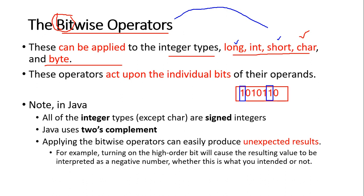One exception is that character is also treated as integer. However, in Java, except character, all integer types are signed. The most significant bit represents the sign of the number. If that bit is 1, the number is negative; if it is 0, the number is positive. For example, binary '1010' represents -10 if the MSB is 1, and +10 if the MSB is 0. Java stores integers in two's complement form internally.